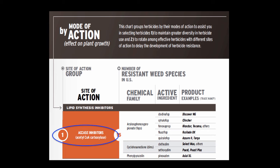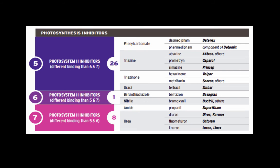For example, if you knew you were using Select Max, you could find that on the chart. It's sometimes helpful to know the active ingredient first. The chart doesn't list every available product — for clethodim, which is the active ingredient in Select Max, we have Select, Section, and others. If you had Select Max, you'd see it's clethodim, see the chemical family, and come over to the left to see it's a Group 1 site of action.